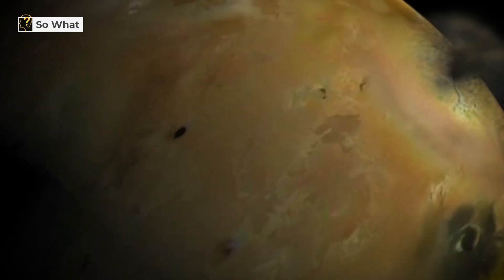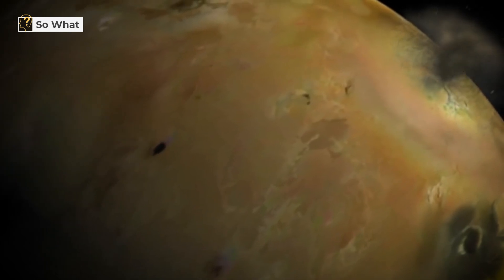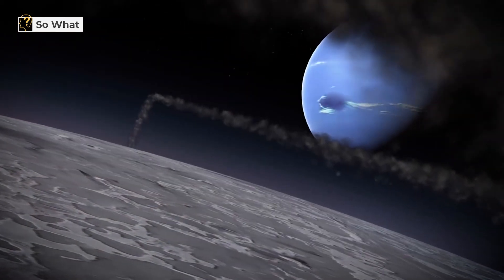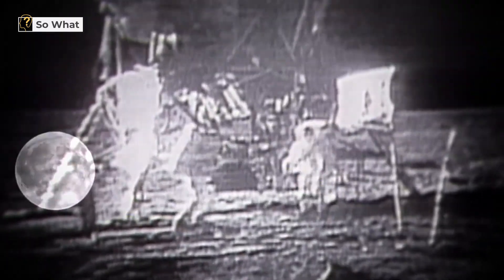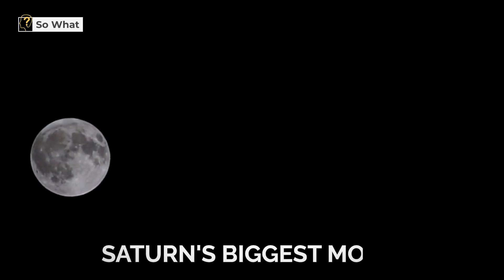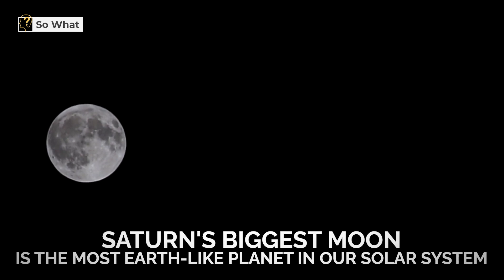And we shouldn't restrict our search to exoplanets alone. A moon absorbs direct solar energy from its star and reflects it back to it through the planet it orbits. So, a moon could be a better choice for human existence than an exoplanet. Titan, Saturn's biggest moon, is the most Earth-like planet in our solar system.